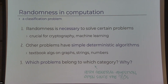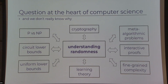Which problem belongs to which category, and more importantly, why? What properties inherent in a problem make it either solvable deterministically and quickly, or impossible to solve without randomness? This is an extremely general question — more than 50 years old. It's one of the main questions in computational complexity and theoretical computer science, with intimate ties to P versus NP, circuit lower bounds, lower bounds for Turing machines, learning theory, and interactive proof systems.